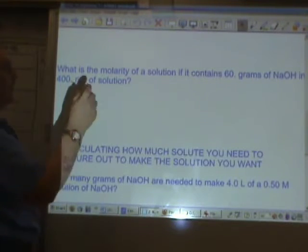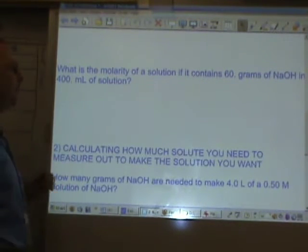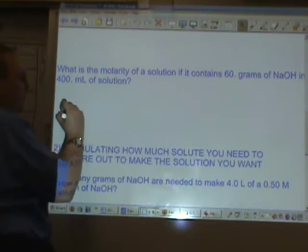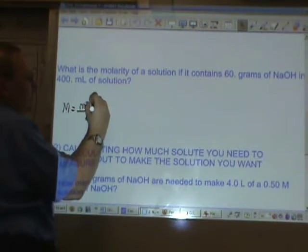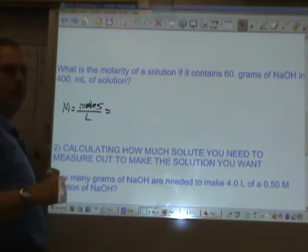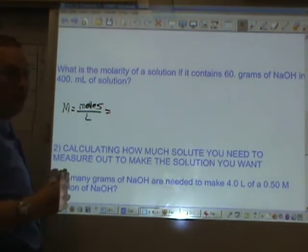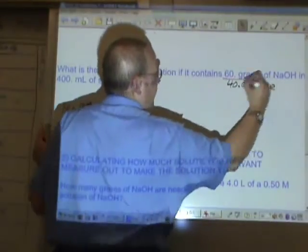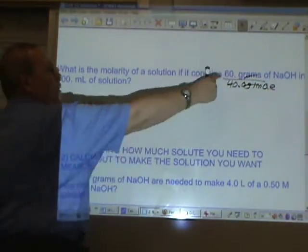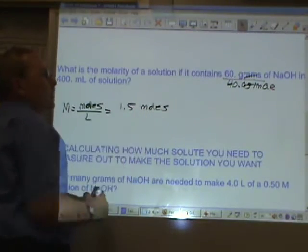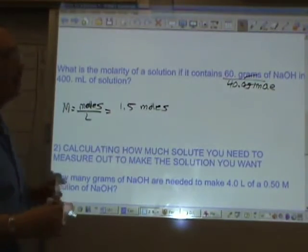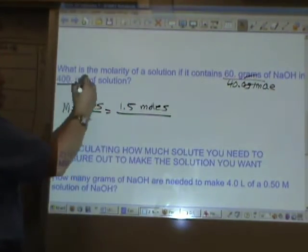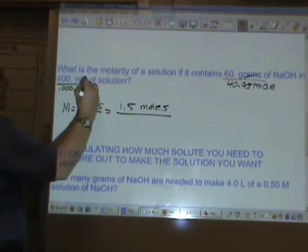What is the molarity of a solution if it contains 60 grams of NaOH in 400 milliliters of solution? They had to make our lives difficult. Molarity equals moles divided by liters. We're given 60 grams of NaOH. We just figured out that NaOH is 40.0 grams per mole. 60 divided by 40, 1.5. Two sig figs, two sig figs, moles. If one mole is 40, 60 is one and a half times as much, so it's one and a half moles.